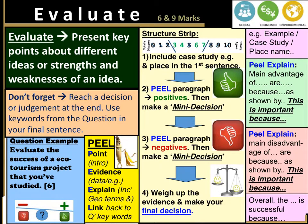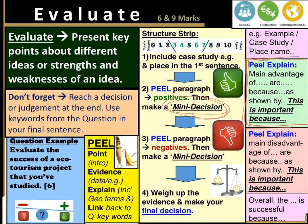Then you're going to make a mini decision — this is probably the bit that most students struggle with. In the green box here, the structure is: 'The main advantages of something are... this is because... as shown by...' That gives you the opportunity to put in some of your data and examples and develop your idea. Then for the mini decision, you're going to say 'this is significant because' or 'this is important because.' At that point, you've made a decision.